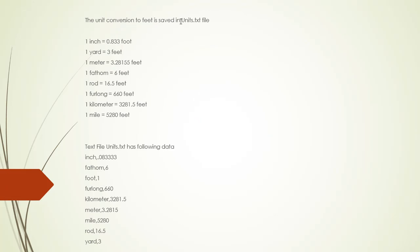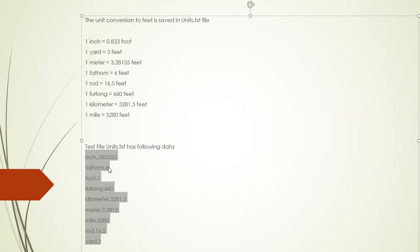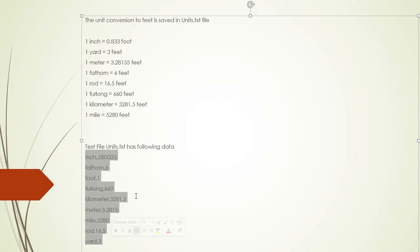We are given a units.txt file that has these values. What this is is a conversion for each of these units into feet. So one inch equals 0.0833 foot, one fathom equals six feet, one foot equals one foot, one kilometer equals 3281.5 feet, and so forth. All these values in the text file are conversions to feet, and that way since we are using the same conversion for each unit we'll be able to convert them between each other.